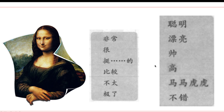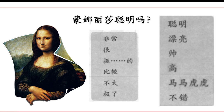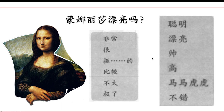Who's this? 这是蒙娜丽莎。蒙娜丽莎聪明吗？Is she clever? Maybe she's a very smart woman. 她非常聪明，她很聪明，她挺聪明的，她比较聪明，她不太聪明，她聪明极了。蒙娜丽莎漂亮吗？蒙娜丽莎非常漂亮，蒙娜丽莎很漂亮，蒙娜丽莎挺漂亮的，蒙娜丽莎比较漂亮，蒙娜丽莎不太漂亮，蒙娜丽莎漂亮极了。